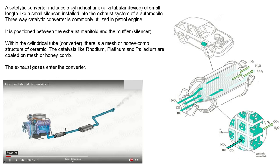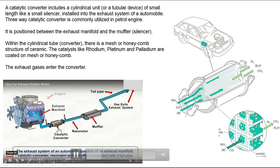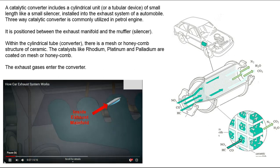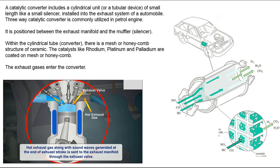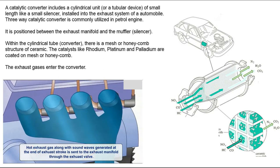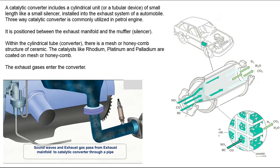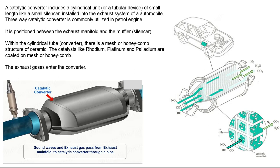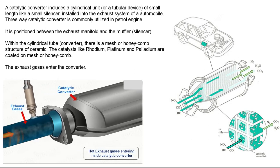This is the engine in working condition. This is the exhaust manifold, and then it is going to the catalytic converter. We will see the video up to the catalytic converter. The engine is in running condition, the exhaust valve is opening and hot exhaust gases are coming outside, flowing through the exhaust manifold, and then coming to the catalytic converter.